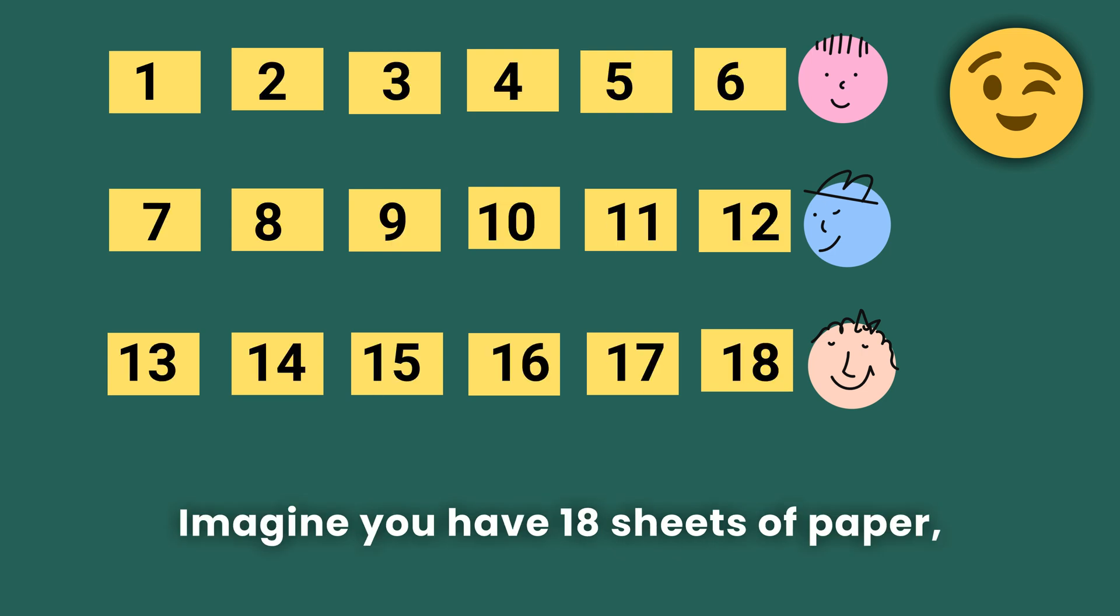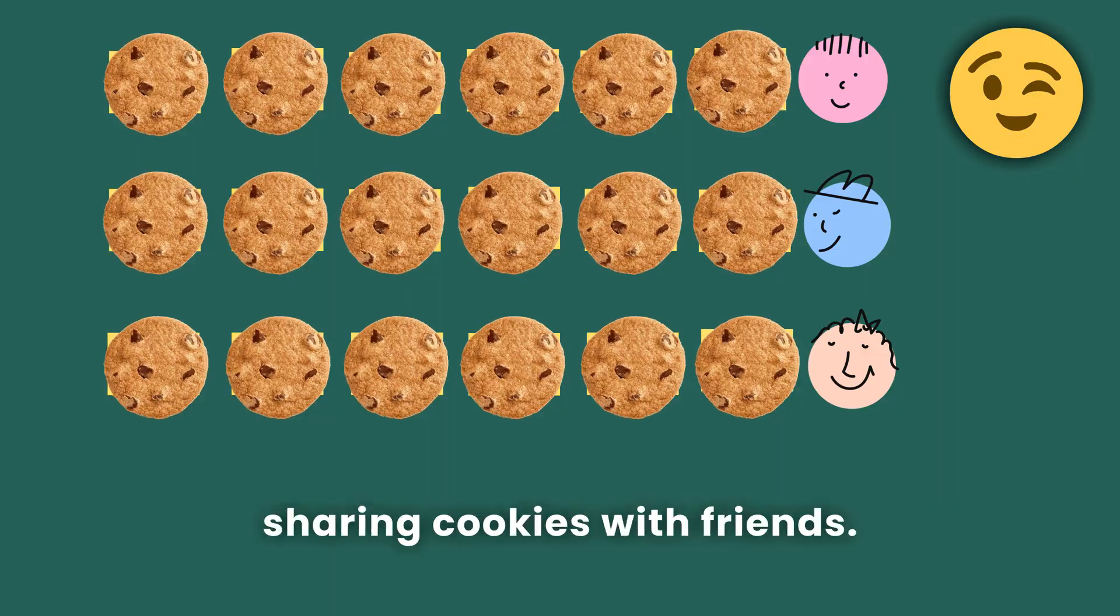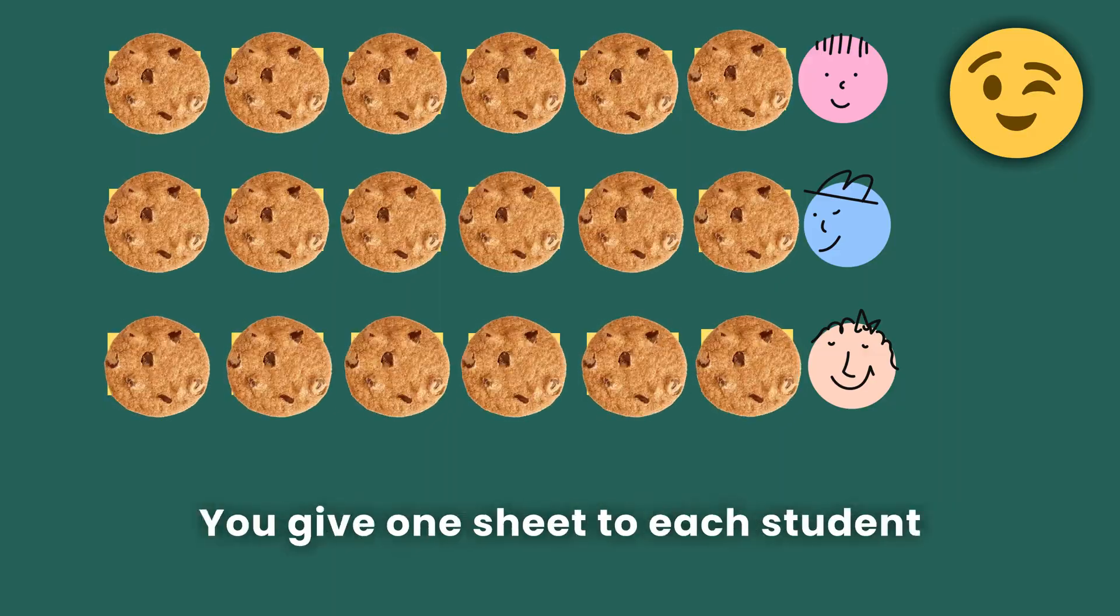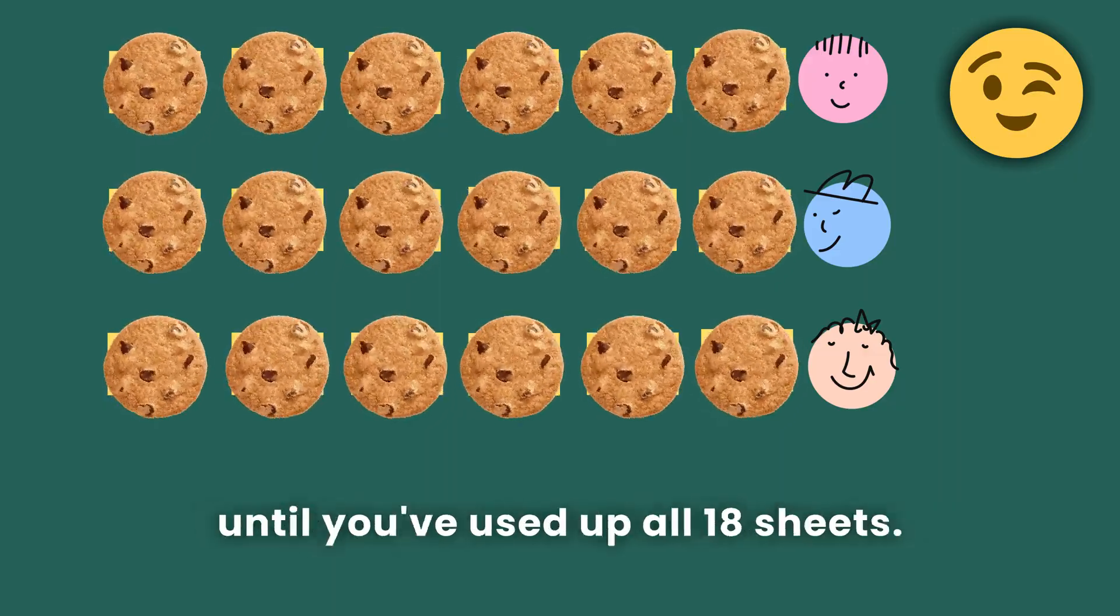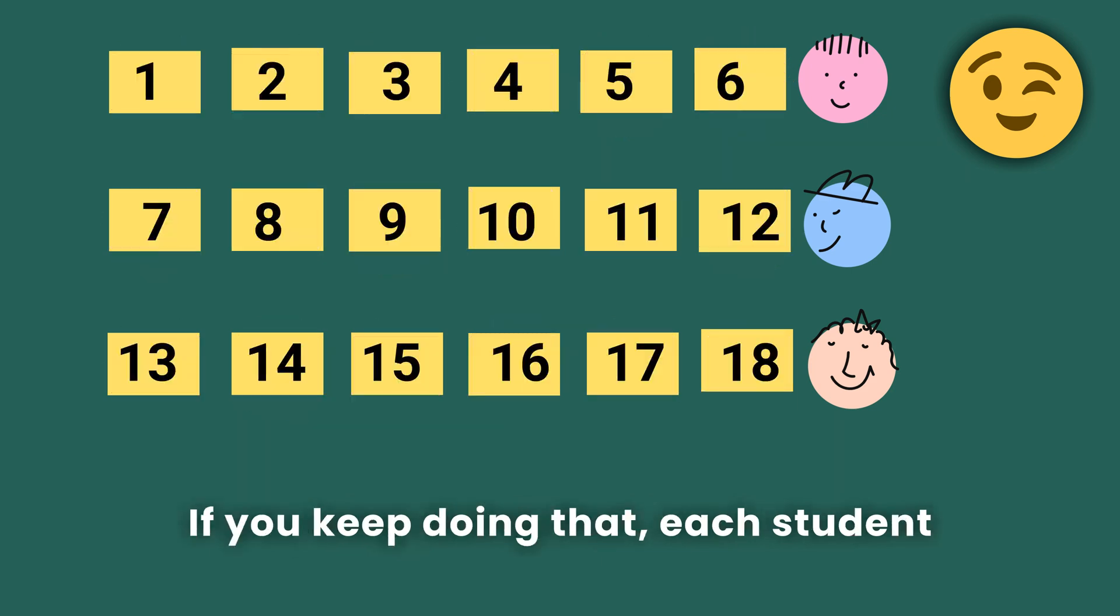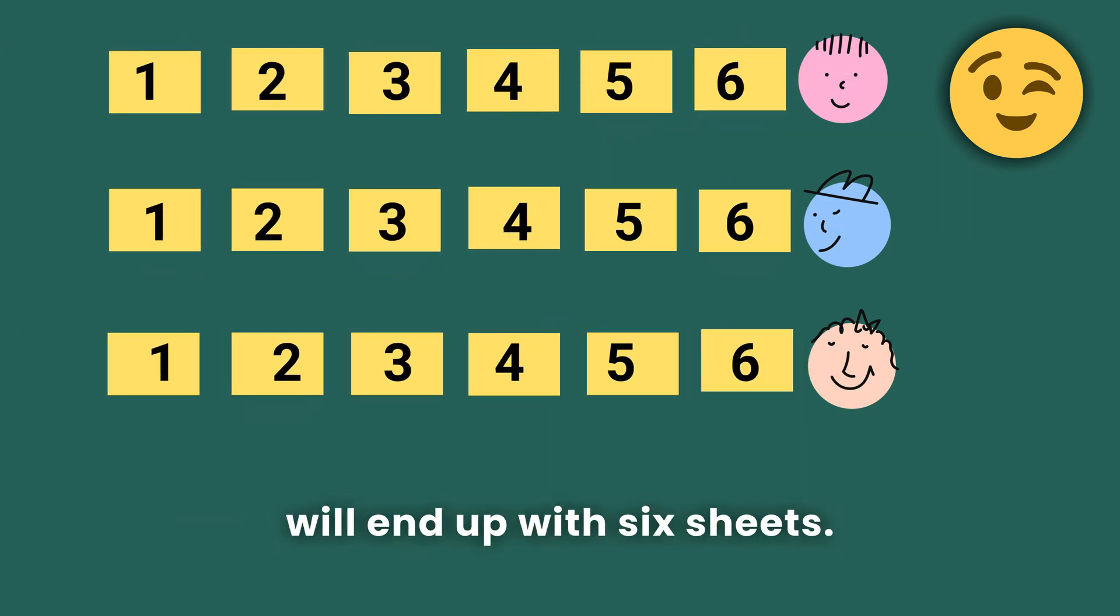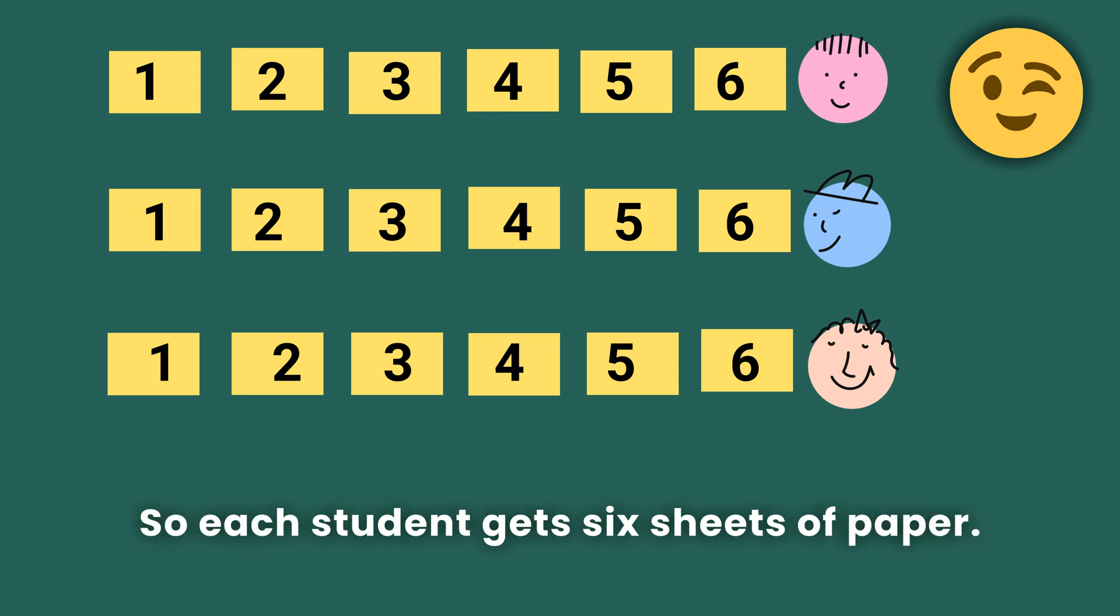Imagine you have 18 sheets of paper and you want to give them out to three students, so that each person gets the same amount. You can think of it like sharing cookies with friends. You give one sheet to each student until you've used up all 18 sheets. If you keep doing that, each student will end up with six sheets, so each student gets six sheets of paper.